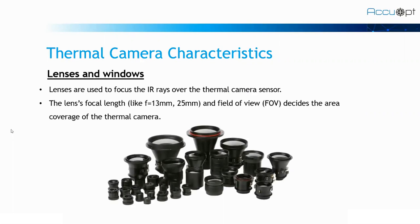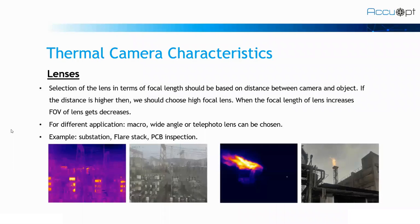The next characteristic is lenses and windows. Lenses are used to focus the IR rays over the thermal camera sensor. While choosing a lens, the focal length and the field of view should be considered, as both of these factors decide the area coverage of the thermal camera. When the object is far away from the camera, we have to choose the lens with a higher focal length. For example, in substation monitoring, the substation area is quite bigger and your camera has to see both near and far objects, so higher focal length lenses play a vital role.